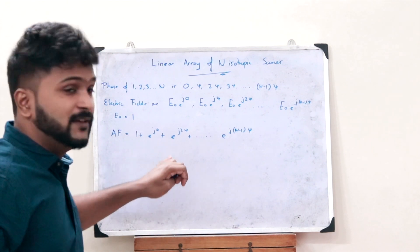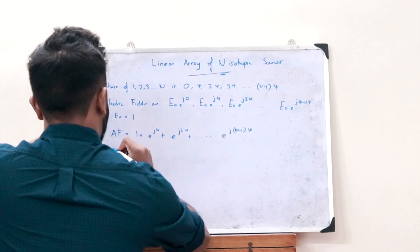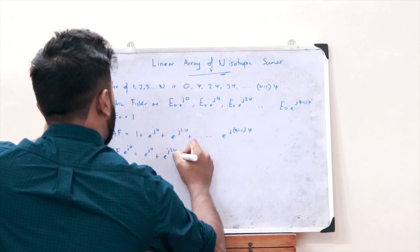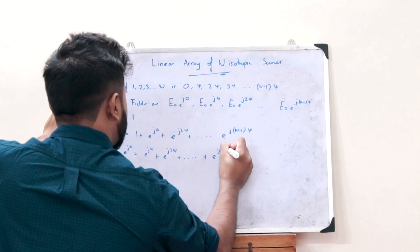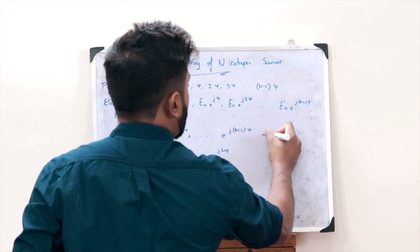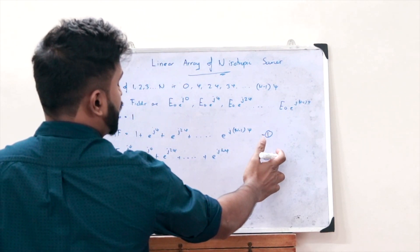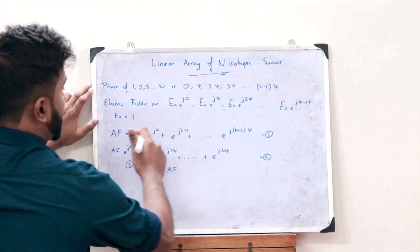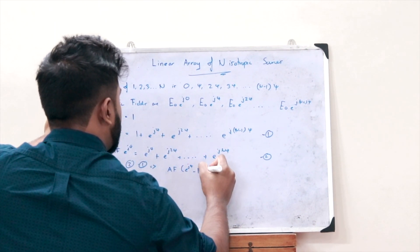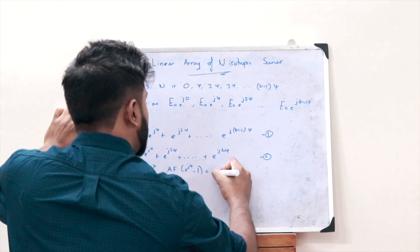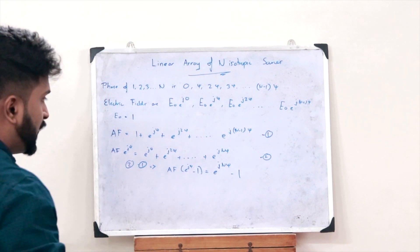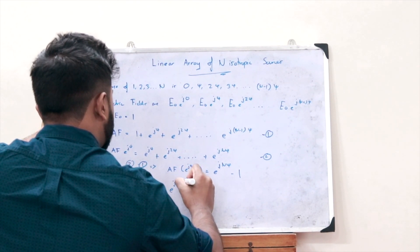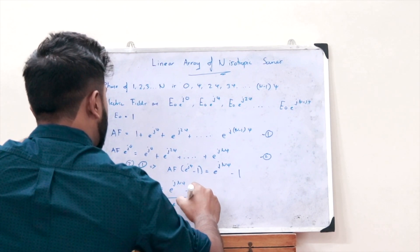Multiplying both sides by e^(jψ), we get AF × e^(jψ) = e^(jψ) + e^(j2ψ) + ... + e^(jnψ). Taking this as equation 2 and the original as equation 1, subtracting equation 1 from equation 2 gives: AF × (e^(jψ) − 1) = e^(jnψ) − 1. Therefore, AF = (e^(jnψ) − 1) / (e^(jψ) − 1).